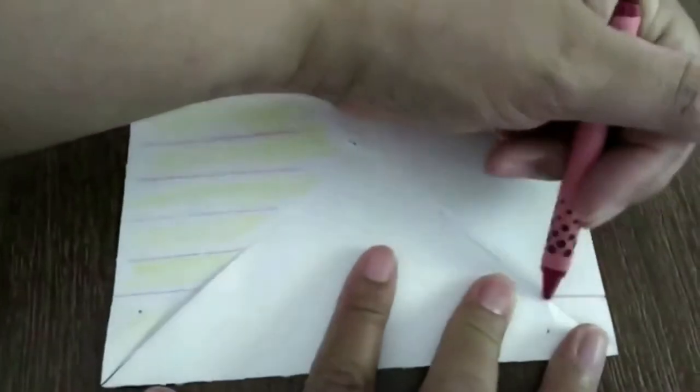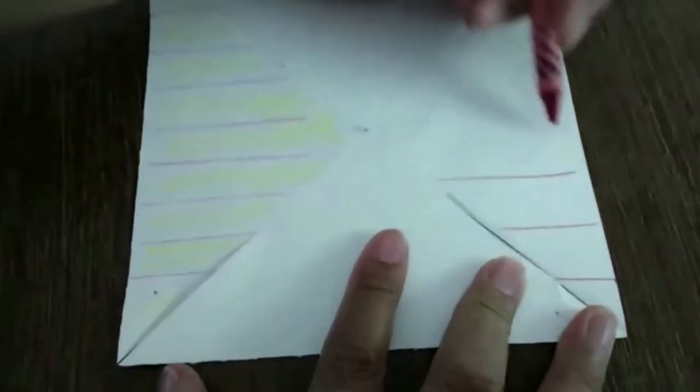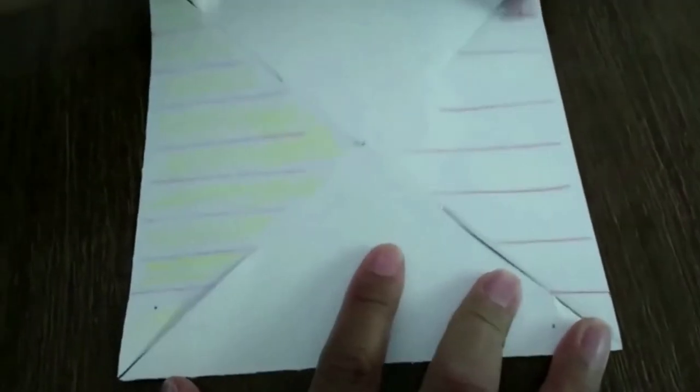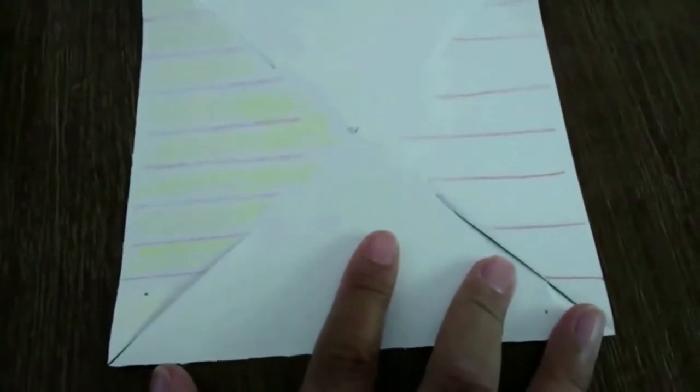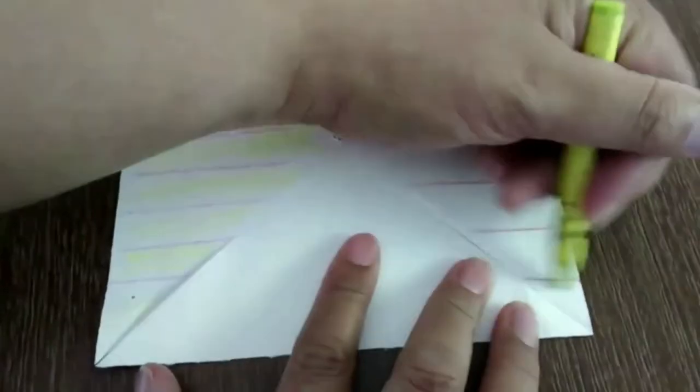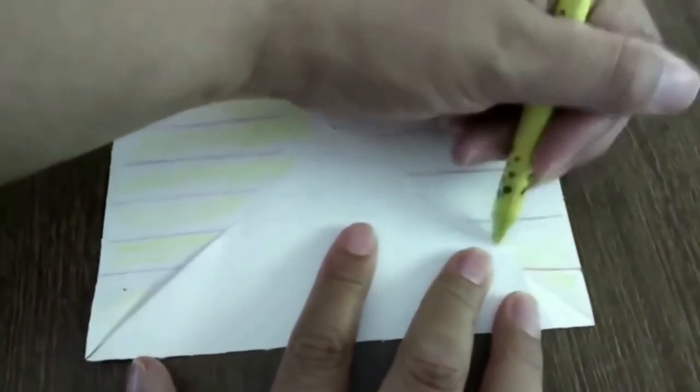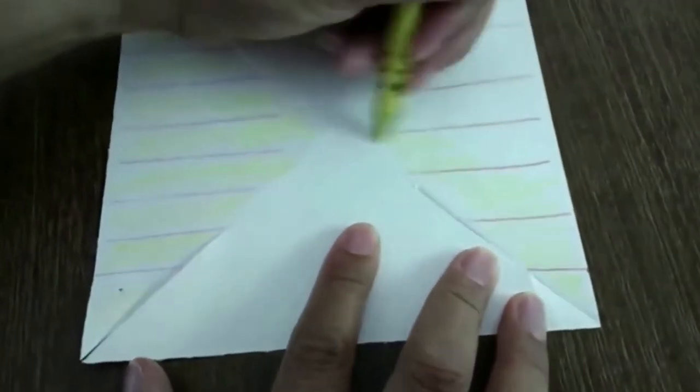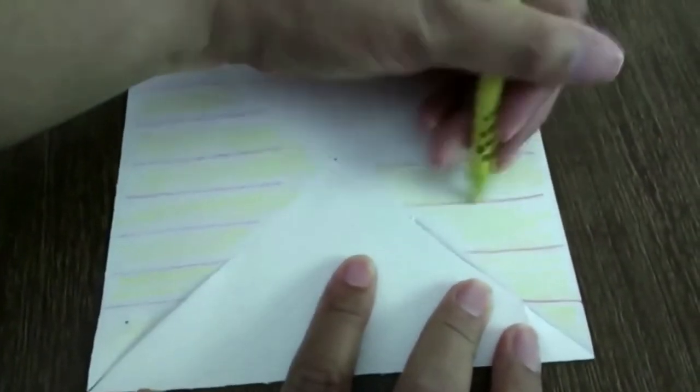The first thing you're going to do is decorate your pinwheel. You can use crayons, colored pencils, or markers to decorate it any way you'd like. Just make sure that you color or decorate both sides of your pinwheel. I'm using crayons to decorate mine today and I thought some stripes would be really fun and summery.